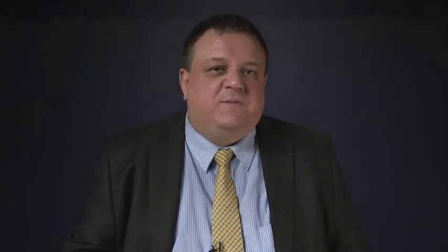Having introduced the corpus and the general task, let's focus on the evaluation metric. The most important metric used here was MRR — Mean Reciprocal Rank — the rank of the correct answer among a ranked list of answers. You take the rank of the correct answer, take the reciprocal of that rank — one point for first place, half a point for second place, and so on — and average this over all questions in the corpus. This metric was first introduced by TREC in 1999 and has been very popular in the Q&A community.